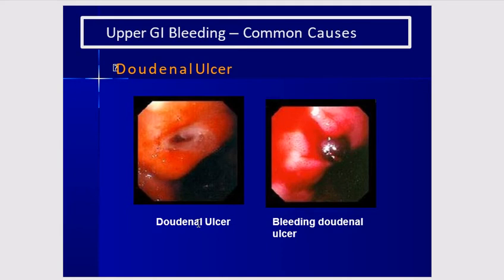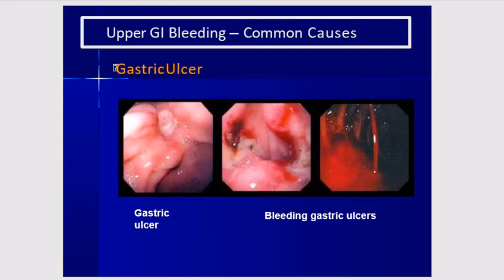On the left is a duodenal ulcer that is not bleeding, and on the right is a bleeding duodenal ulcer. This is a gastric ulcer: on the left, not bleeding; on the right, bleeding.